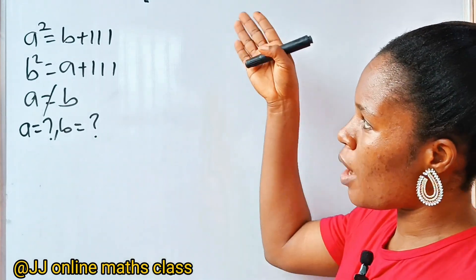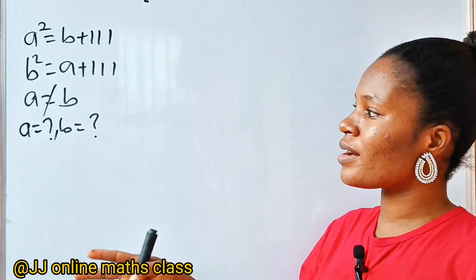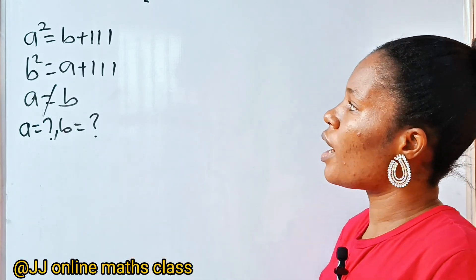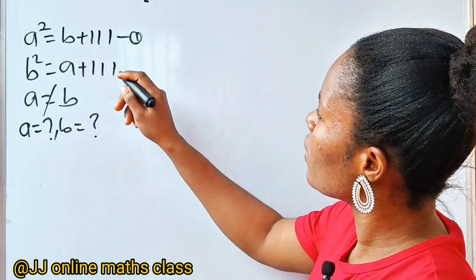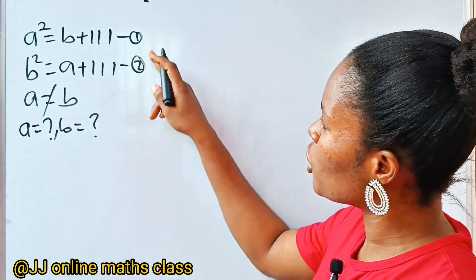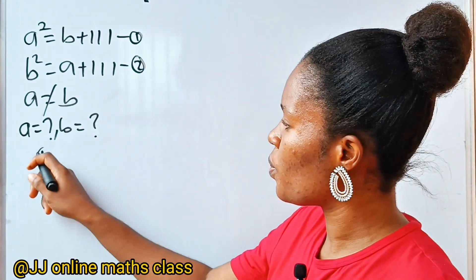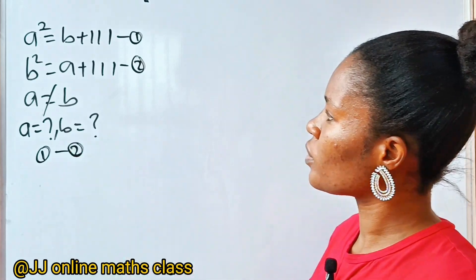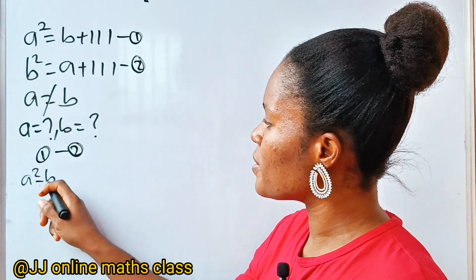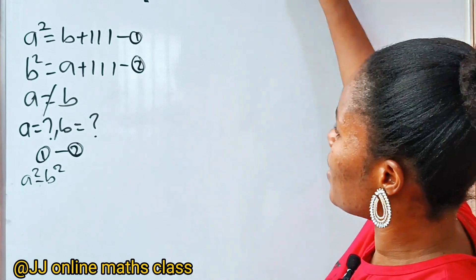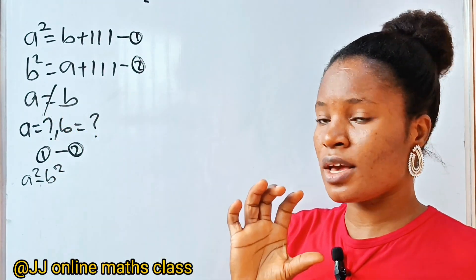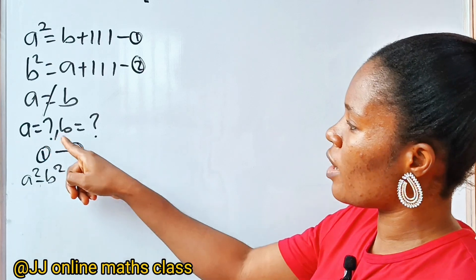Today we are faced with another Math Olympiad question and we are asked to solve for the value of A and B. Now, let's call this equation 1 and this equation 2. If we say equation 1 minus equation 2, so it's going to be A squared minus B squared. But before that, let me note: A is not equal to B. That's a condition, and then we are looking for A and B.